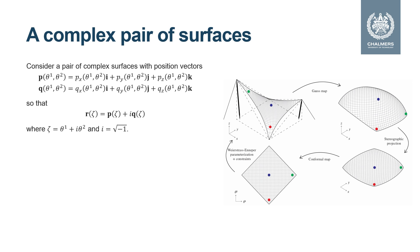But it takes as departure a pair of complex surfaces with position vector p and q, which together form a complex surface r as p plus the imaginary number times q. The surfaces p, q and r take the complex coordinates zeta equals theta superscript 1 plus the imaginary number times theta superscript 2 as an argument. By applying the Weierstrass-Enneper parametrization on r, we can map a complex point zeta in complex space to a real point on a minimal surface in three-dimensional real space.